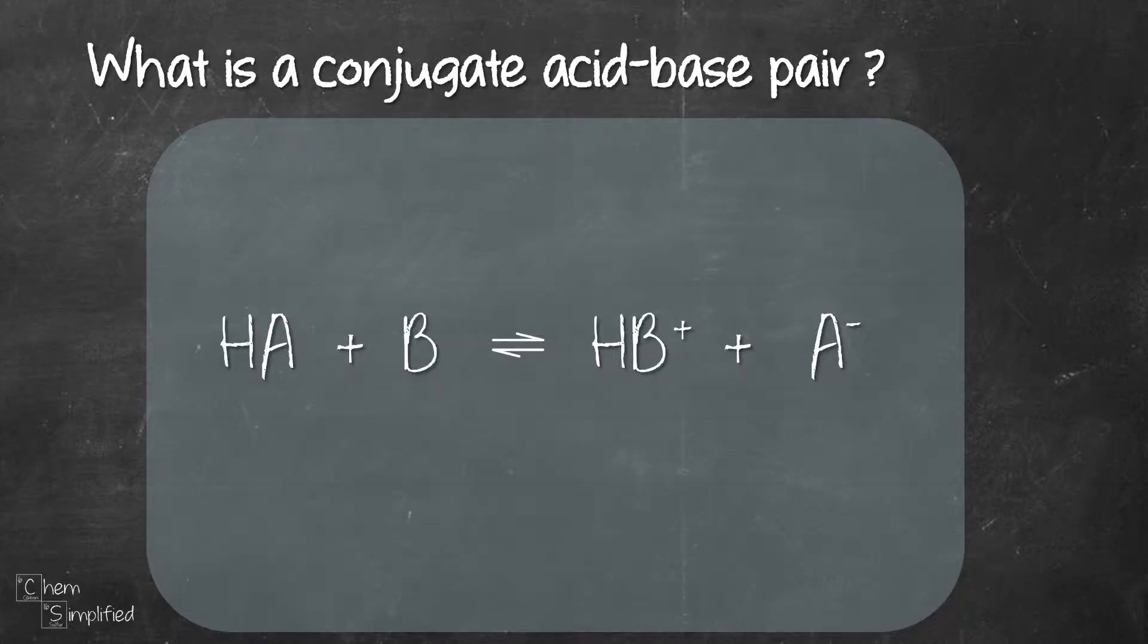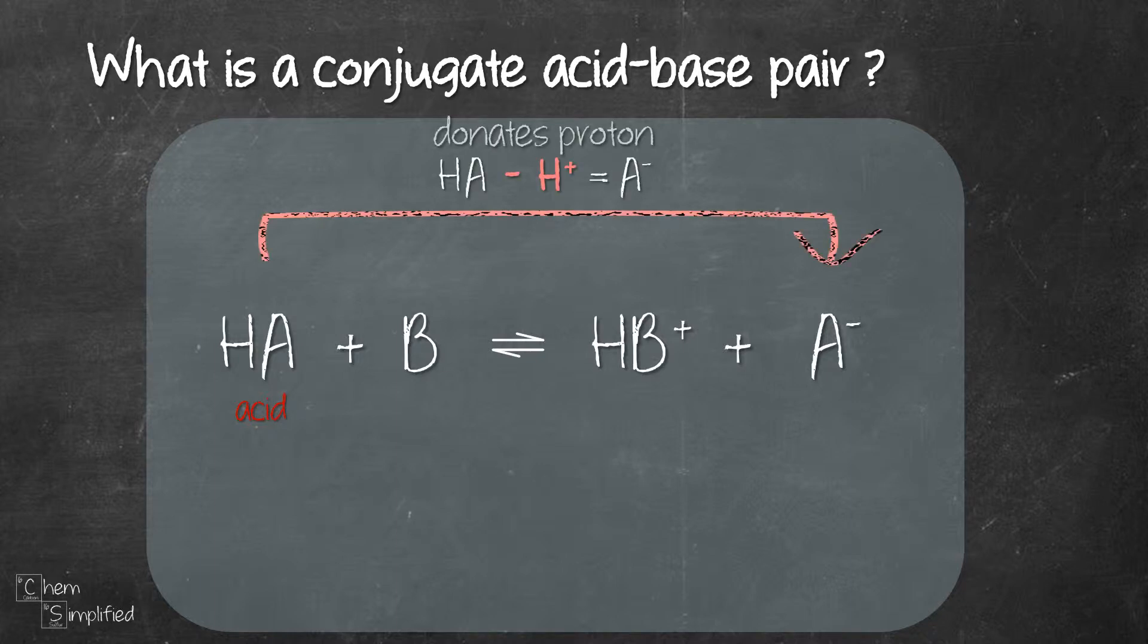To answer this question, we'll need to look at a Bronsted-Lowry acid-base reaction. HA is an acid because it donates a proton to B. By doing so, it becomes A-.